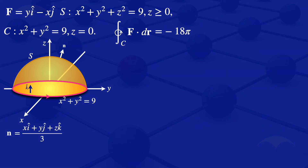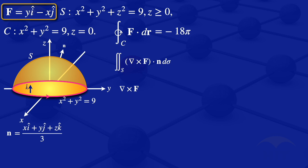We now evaluate the double integral over S of (∇×F)·n dσ. For ∇×F, with F = yi - xj, we compute the determinant with i, j, k in the first row; ∂/∂x, ∂/∂y, ∂/∂z in the second; and components y, -x, 0 in the third. Evaluating that determinant gives ∇×F = -2k.